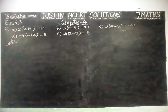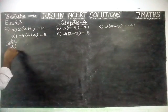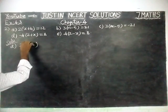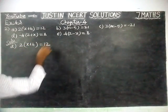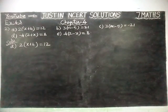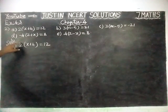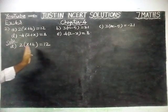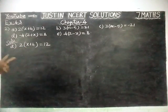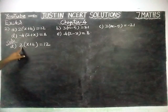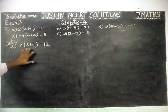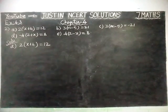We are going to solve 2(x + 4) = 12. Here we can do it in two steps. First step, we can multiply the two inside, then take each number one by one. Second method, we can take this 2 directly to the right hand side and then solve. Now we are going to solve this sum using the second method.